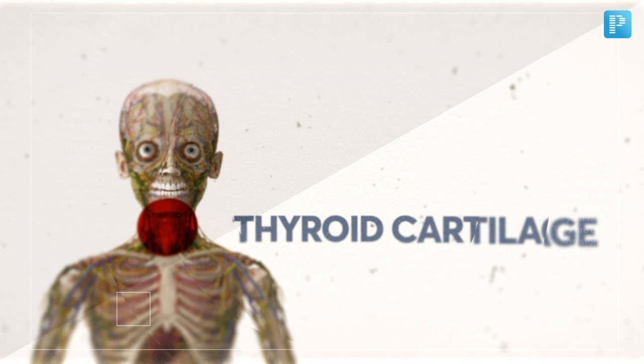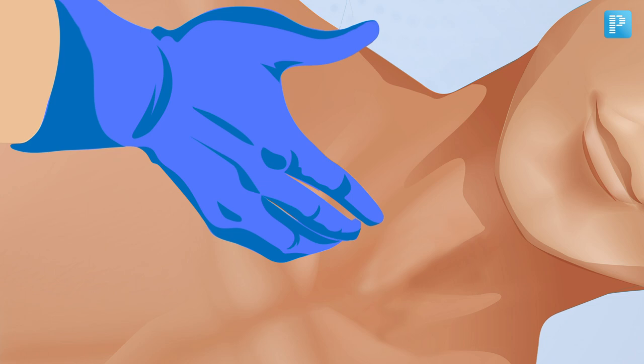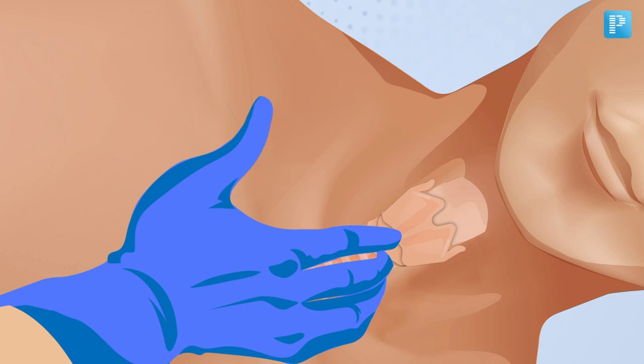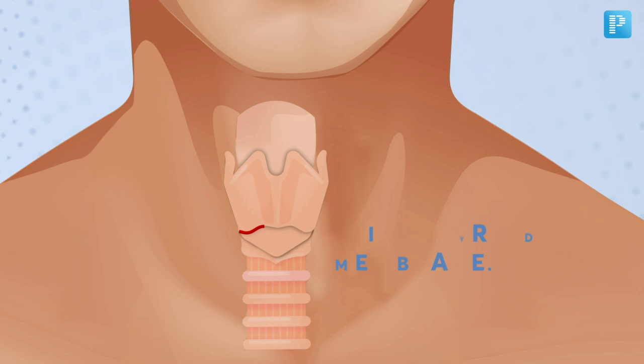For needle cricothyrotomy, the first step is to know the landmarks. The landmark is your thyroid cartilage, identified by the Adam's apple — more prominent in men, less so in females. Follow the Adam's apple downward and you'll feel a loss of resistance where a membrane lies. That membrane at the lower border of the thyroid cartilage is your cricothyroid membrane.